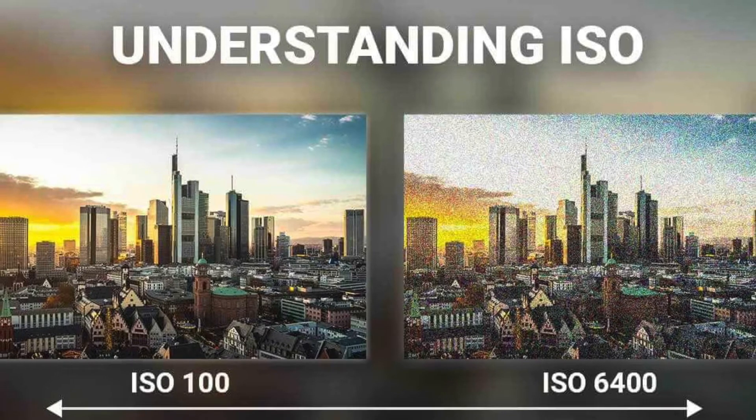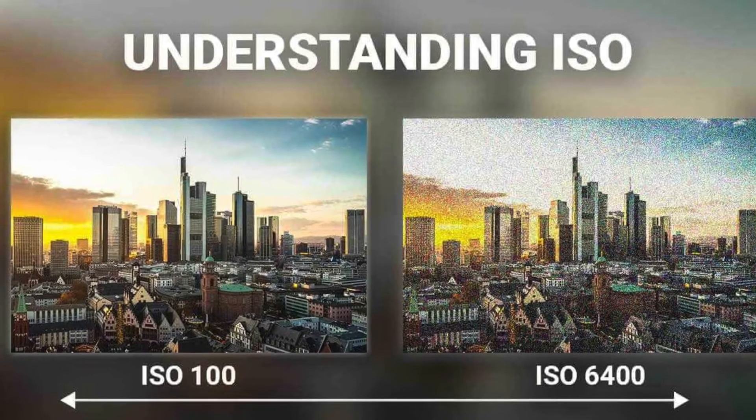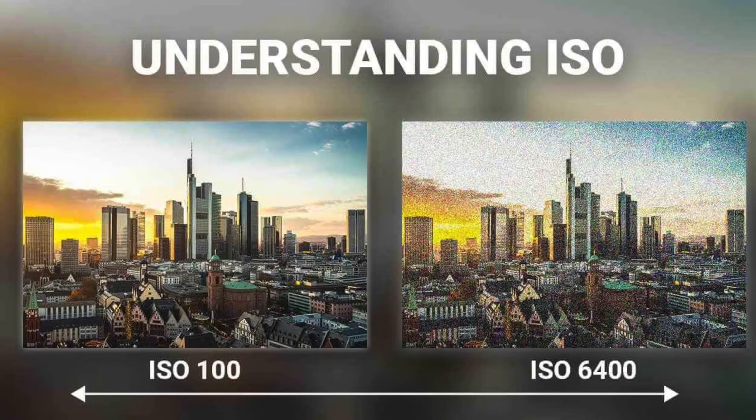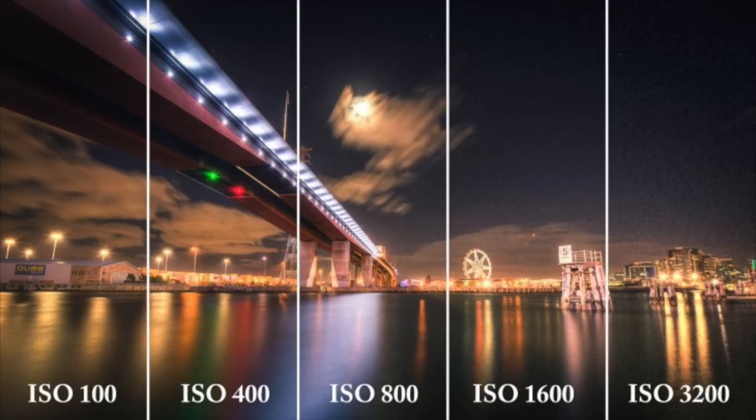The problem with ISO is that the higher you go, your image quality tends to decrease — meaning you start to get grain in your images. You might not see the grain at face value, but if you want to crop in and get closer, you will start to see more grain compared to shooting at ISO 100, which is the perfect ISO and where you always want to be. Depending on the environment, if you go up in value, you will see a little bit of grain in your image.